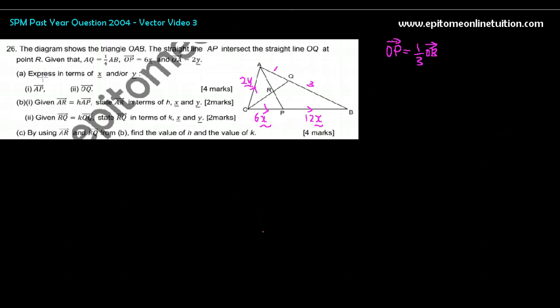Express in terms of X and Y, AP. Normally the beginning part is easy. What's AP? Well, very easy. AP is AO plus OP.